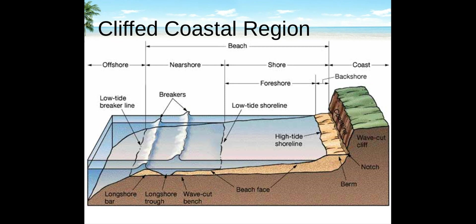The lower shore face is the area only moved by storm waves, which has rocky stratified sand. The surf zone is where the waves break — this area is periodically wet and dry due to wave action and tides. The foreshore is made of planar laminated, well-sorted sand. The beach face is where the swash of the breaking wave runs up and the backwash flows back in.